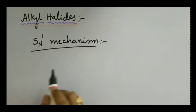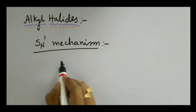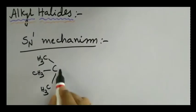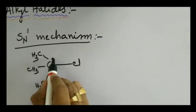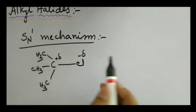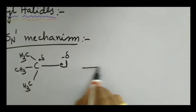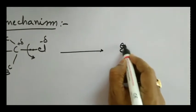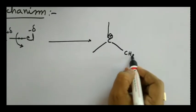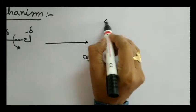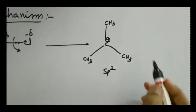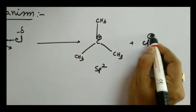SN1 mechanism is adopted by tertiary alkyl halides, so I am taking tertiary butyl chloride here. In this molecule, carbon bears a partial positive charge and chlorine bears a partial negative charge. Initially, the carbon-halogen bond ruptures on its own to produce a carbocation intermediate. We know that a carbocation is sp2 hybridized; as a result, the intermediate is flat — a trigonal planar species — with the elimination of a Cl⁻ ion.